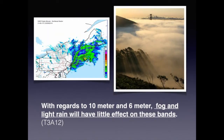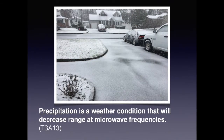Neither 6 nor 10 meters are attenuated by light rain. For your test, know that fog and light rain will have little effect on the 10 meter and 6 meter bands. However, microwaves have trouble propagating through precipitation. Rain, fog, or snow can cause UHF signals to fade completely. Understand that precipitation is a weather condition that will decrease the range of microwave frequencies.